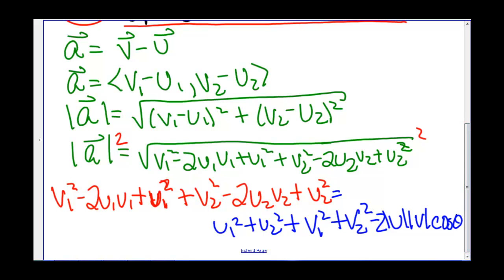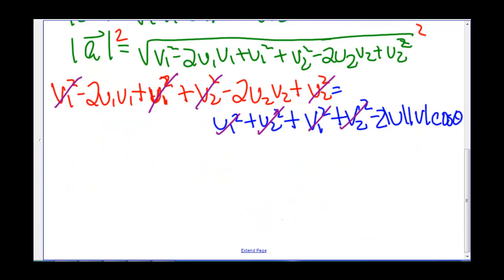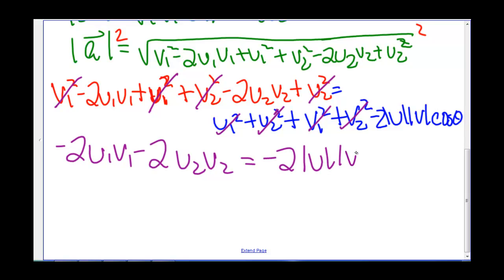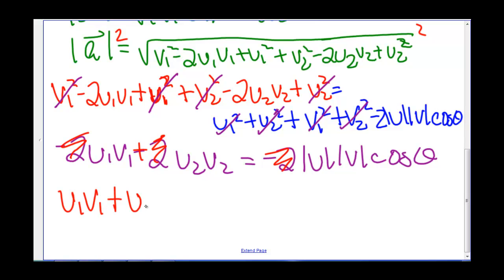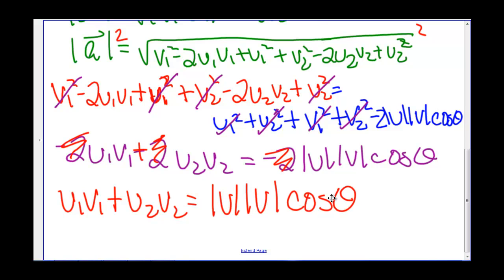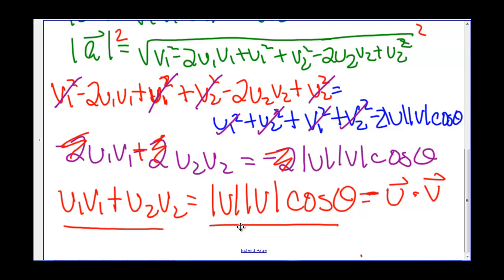Doing some cancellations: v₁² cancels, u₁² cancels, v₂² cancels, and u₂² cancels, leaving us with -2u₁v₁ - 2u₂v₂ equals -2 times the length of u times the length of v times cosine theta. The -2's cancel, so we're left with u₁v₁ + u₂v₂ equals the length of u times the length of v times cosine theta. Both of these are equal to what we call the dot product, vector u dot vector v. So these are two separate formulas for computing the dot product, and this is how we define the dot product.